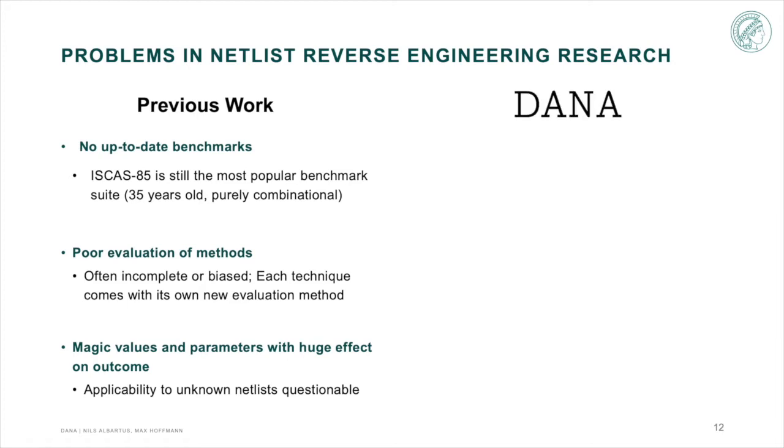So with DANA we wanted to do better. We built our own benchmark suite of 9 open source cores, ranging from CPUs to cryptographic coprocessors and one big SOC, which we synthesized for both ASICs and FPGA.